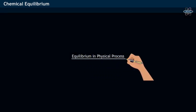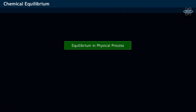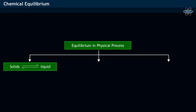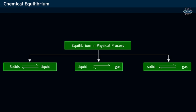Equilibrium in Physical Process. Equilibrium is of three types: solid-liquid equilibrium, liquid-gas equilibrium, and finally solid-gas equilibrium.